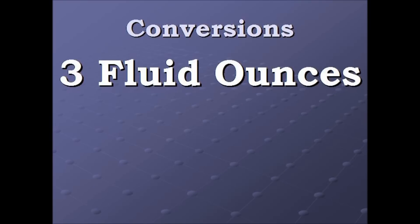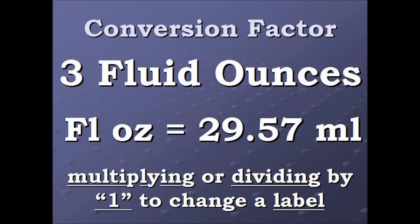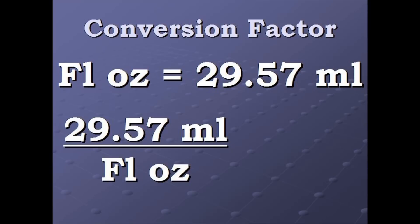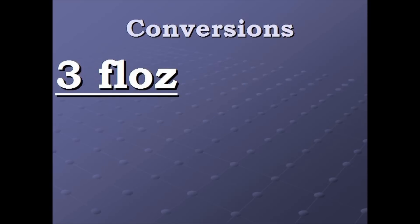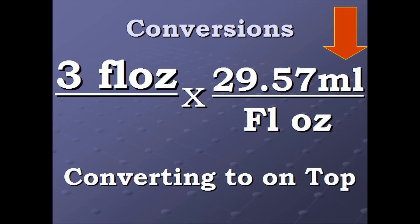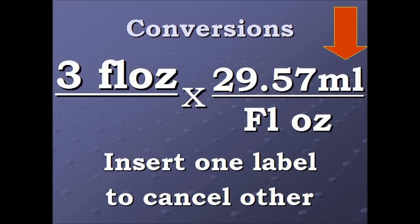We start with the three fluid ounces and insert our conversion factor. Remember that to convert, we're going to be multiplying or dividing by the number one to change a label. We turn the conversion factor into a ratio — this ratio equals the number one. We multiply that conversion factor into our three fluid ounces. What we're converting to is on top: the milliliters. We're inserting one label in an effort to cancel out another, so our fluid ounces cancel out.